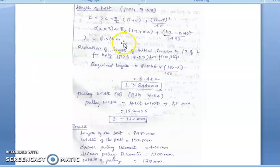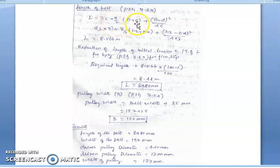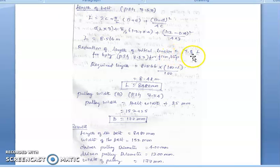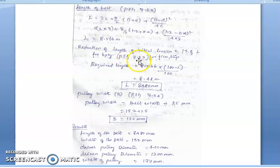Next, we find the length of the belt. From page 7.53, using the formula with all known parameters — center distance C, capital D, and small d — the belt length L = 8.566 meters. Due to alternating contraction and expansion, for 6 plies, a 1% reduction is applied, giving a final required belt length L = 8480 mm.